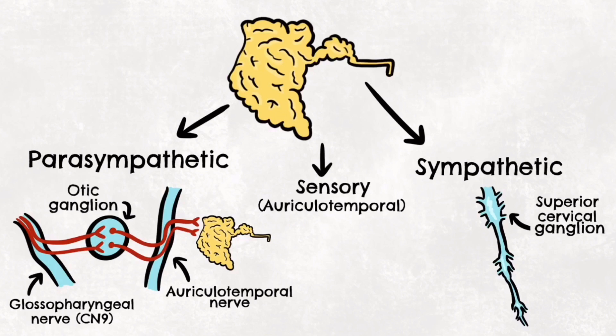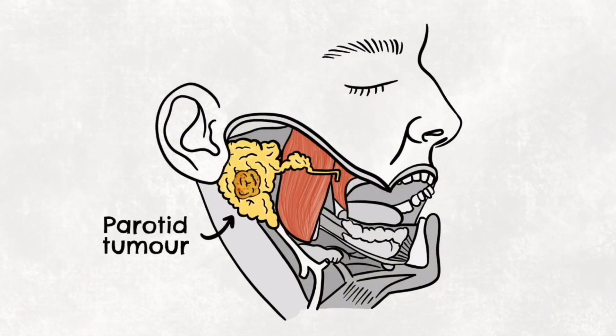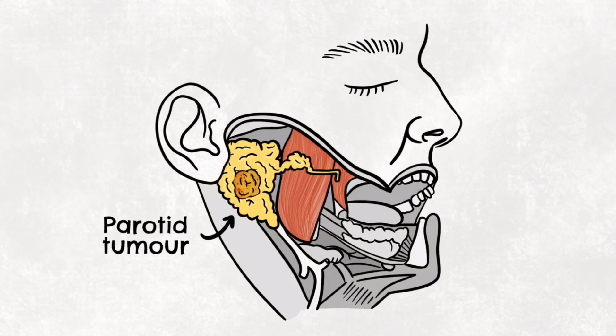Salivary gland tumors are not common — they make up 6% of all head and neck tumors. The parotid gland is the most common site of salivary gland tumors. The tumors are usually benign and slow growing, such as a pleomorphic adenoma.